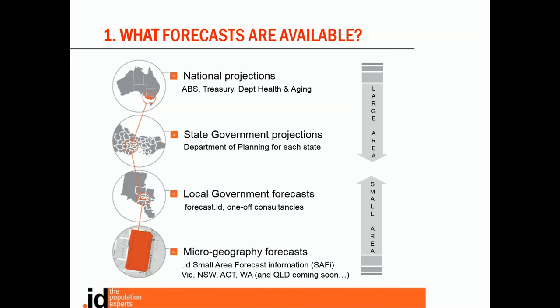State projections are produced by state governments, usually the planning department, and therefore allocating state government funds across the state. Each state is a little different in how they go about doing this so it's not always easy to combine them into one national set. Local government forecasts are produced to assist local governments allocate resources to different neighbourhoods within their jurisdiction. By far the most common producer of local government forecasts is ourselves, ID. We produce forecasts for 130 councils under the name of forecast ID. Councils that subscribe to forecast ID generally make the forecasts available for free to the public via their website, hence you can access them too.